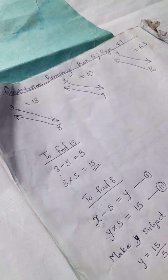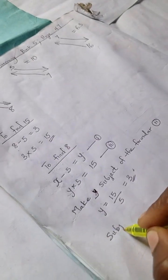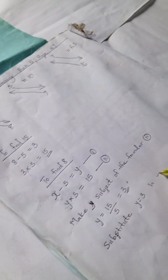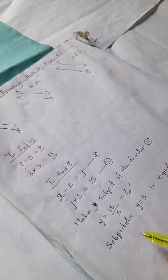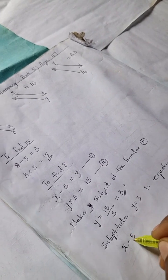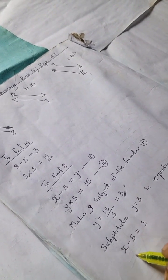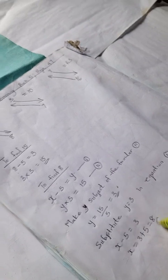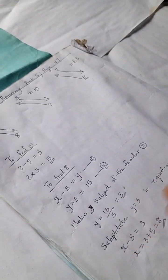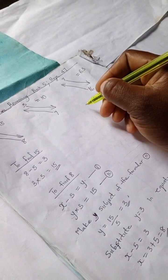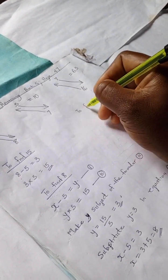Now we substitute y equals 3 into equation 1. Since y equals 3, we have x minus 5 equals 3, which gives x equals 3 plus 5, and x equals 8. So that's it for finding 8.